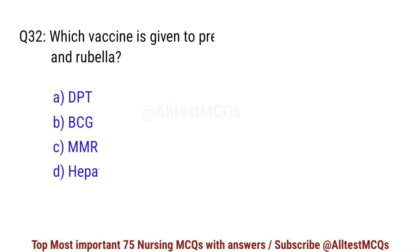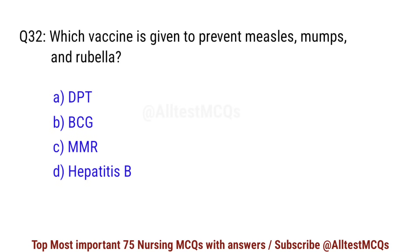Question number 32. Which vaccine is given to prevent measles, mumps, and rubella? Correct option is C: MMR.